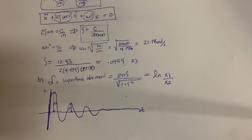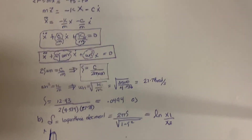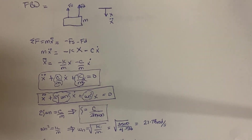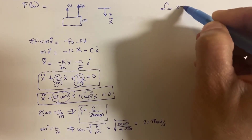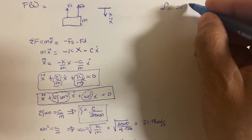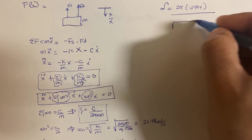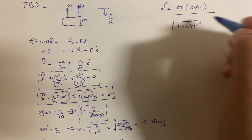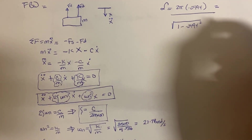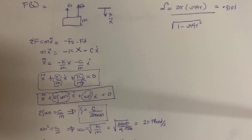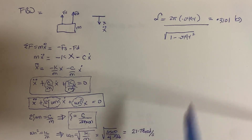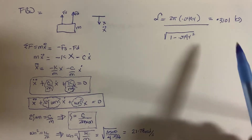Let's calculate the logarithmic decrement. We already know the formula: 2π times the damping ratio — which we found to be 0.0494 — divided by the square root of 1 minus 0.0494 squared. That gives us a value of 0.3101, which is the logarithmic decrement as requested in part B of the problem.